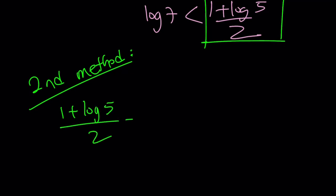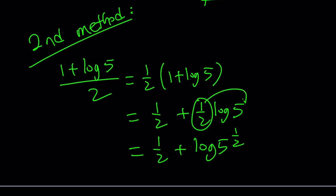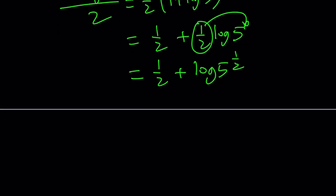1 plus log 5 over 2. So we can write it as 1 half times 1 plus log 5, and then distribute the 1 half to write it as 1 half plus 1 half log 5. Now, 1 half log 5 can be written as log 5 to the power 1 half because this 1 half can be moved and made an exponent. And then we can write the 1 half as log 10 to the power 1 half.